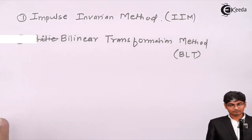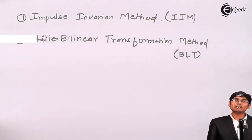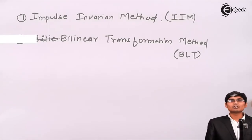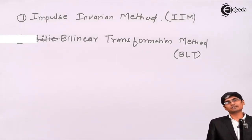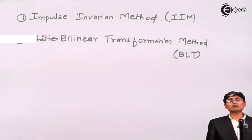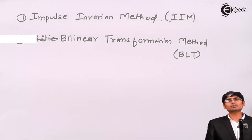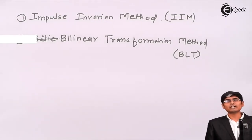Every IIR filter will be designed from an analog filter by applying a mapping to it. If we apply a mapping to an analog filter, we will get a digital filter. This will be the overall process for designing IIR filters.